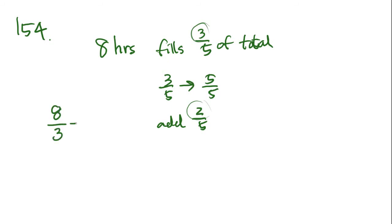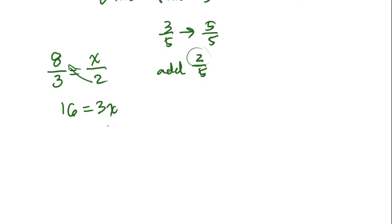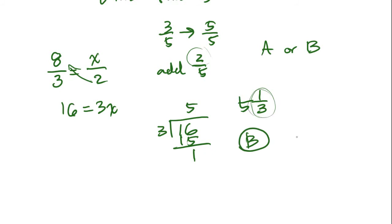So 8 over 3 equals x over 2, and cross multiply. You get 16 equals 3x. And now we solve for x. It's going to go into it 5 times, 15, 1, and then the answer is 5 and 1 third. Now in the answer choices, they give us 5 hours and 30 minutes or 5 hours and 20 minutes. So it's either A or B. Now, what's a third of an hour? There are 60 minutes in an hour, right? So a third of that is going to be 20 minutes. So the answer is B, which is 5 hours and 20 minutes.